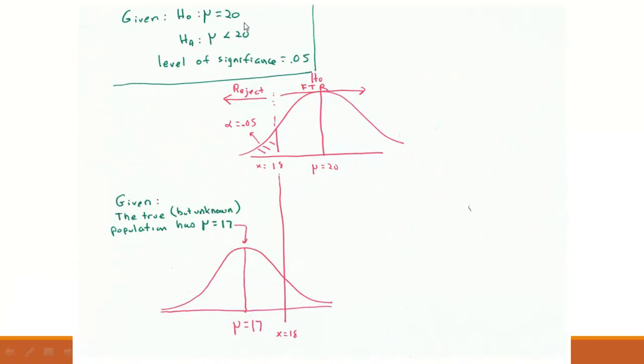Okay, so now on the top here I have just the same graph reproduced with the HO, the mean is 20 and the alpha is down here. Now what I have on the bottom is another given, that is that the true but unknown population mean really has a mean of 17. So I'm drawing that curve out here with a mean of 17 and now I've extended that line of demarcation, that 18, on into this distribution as well. So the point of demarcation between reject and fail to reject is at the same spot on both of them.